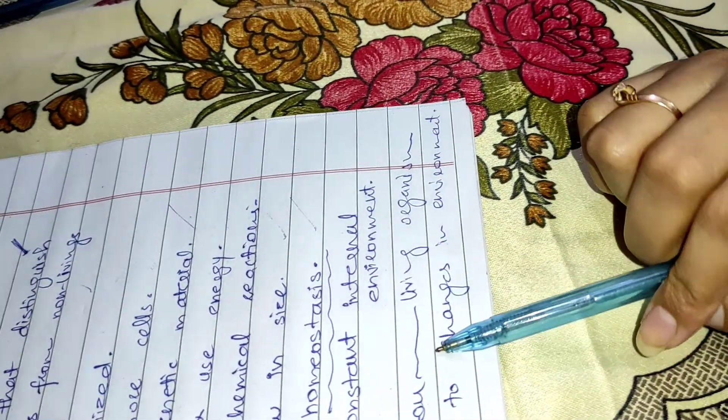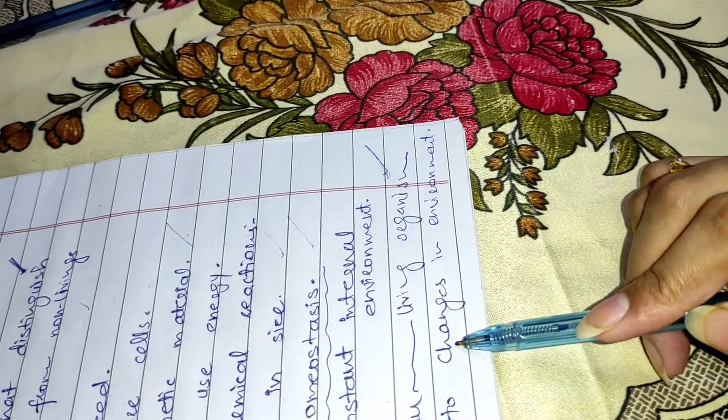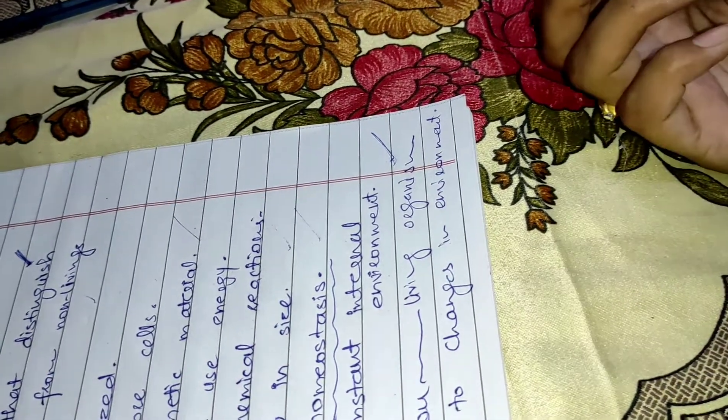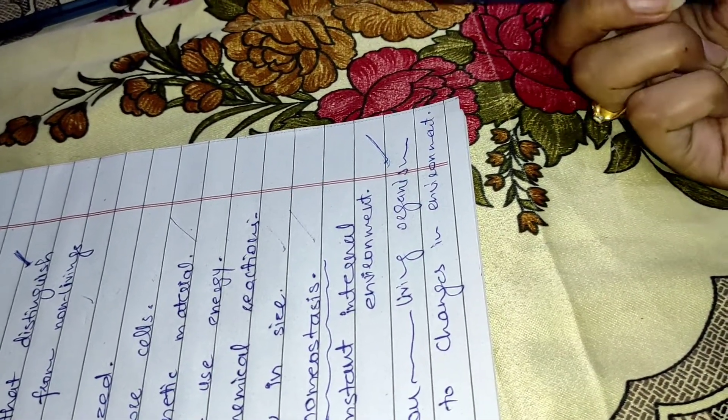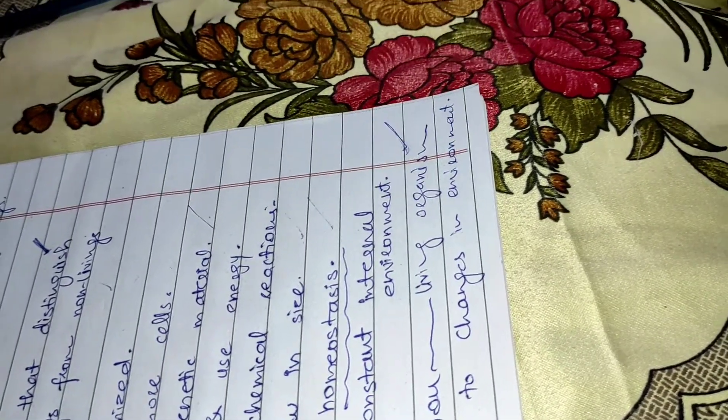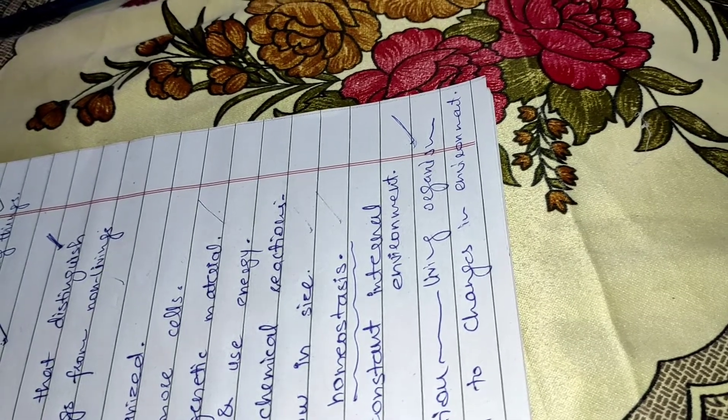Maintain their internal environment despite the fluctuations in the external environment. Now, reproduction, reproduction is happening in living things. After that, they respond to changes in the environment. When there are changes in the environment, the organism's body responds according to these changes. So, these are all the characteristics that we have seen.